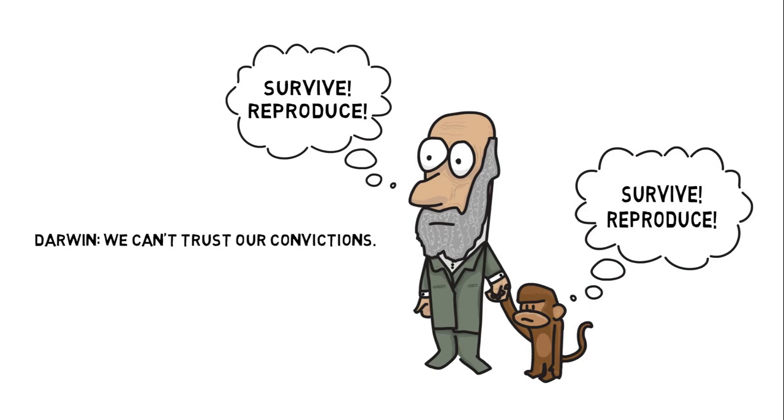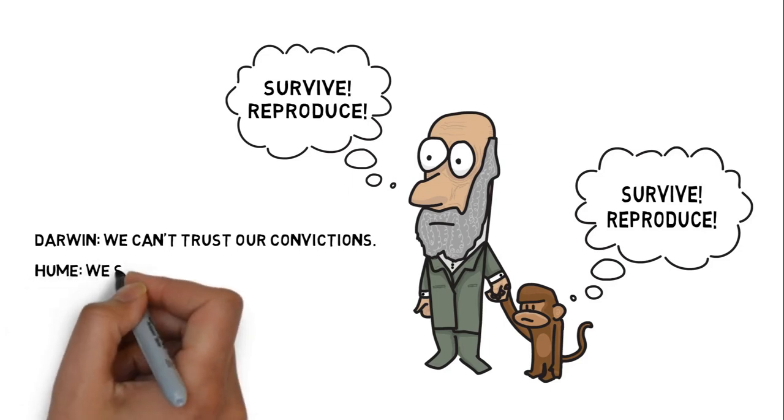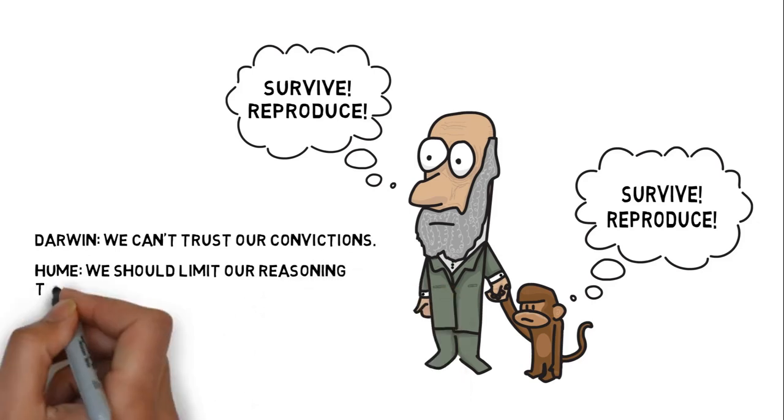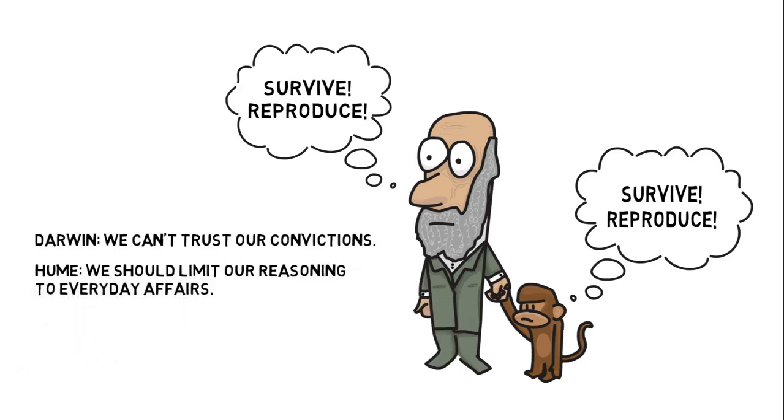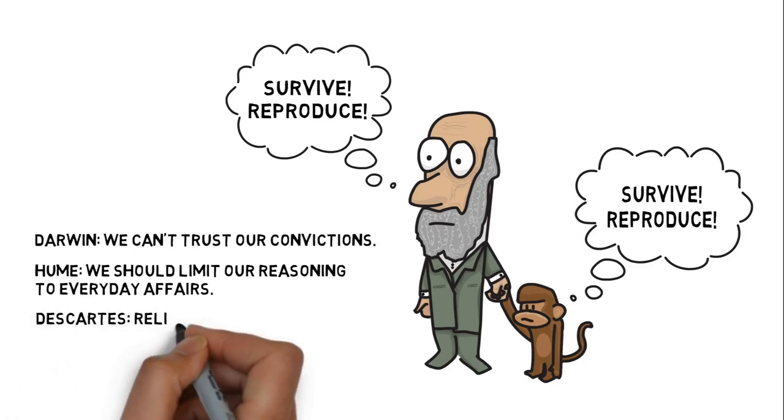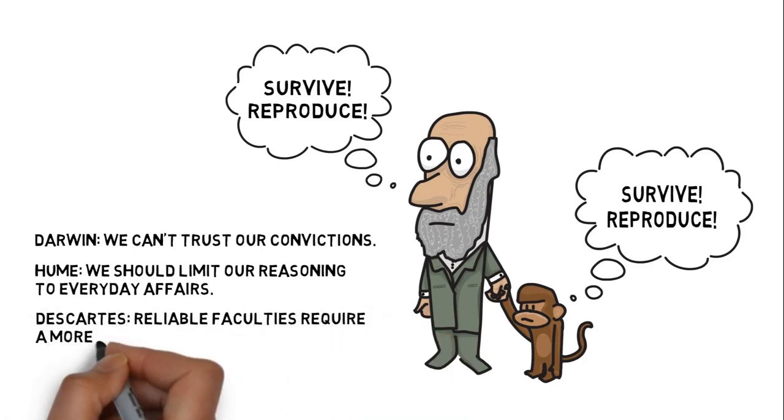If naturalists choose to dogmatically cling to naturalism, even though it can't possibly be defended, then taking the advice of Hume, it would do well to limit their reasoning to tasks immediately related to everyday life. And, following Descartes, if naturalists aren't happy being so confined by their weak cause, perhaps it's time to believe in a more powerful cause.